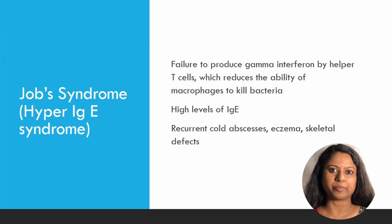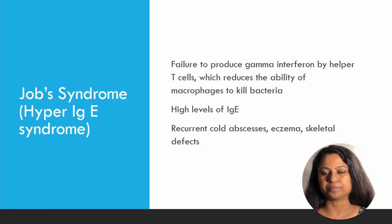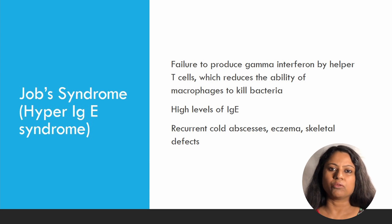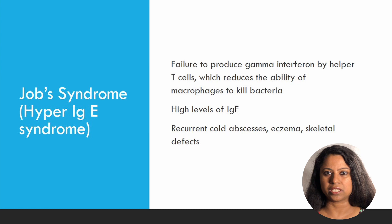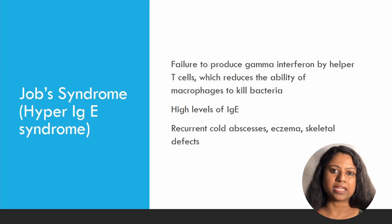Job's syndrome, or Hyper-IgE syndrome, is characterized by very high levels of IgE in the bloodstream, along with recurrent cold abscesses and eczema. It is due to a defect in production of gamma interferon by the helper T cell, which leads to reduced function of macrophages and the recurrent cold abscesses. Th1 responses are affected and Th2 responses get out of control, leading to high IgE levels. It may also present with sepsis and persistent molluscum contagiosum infections.